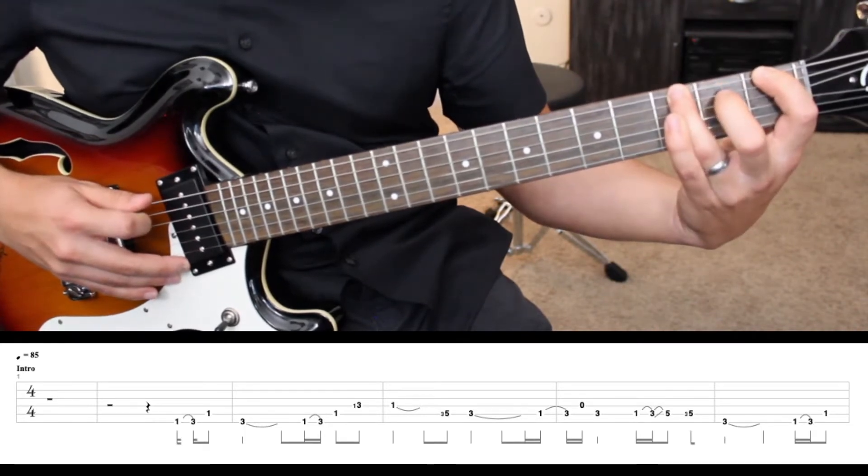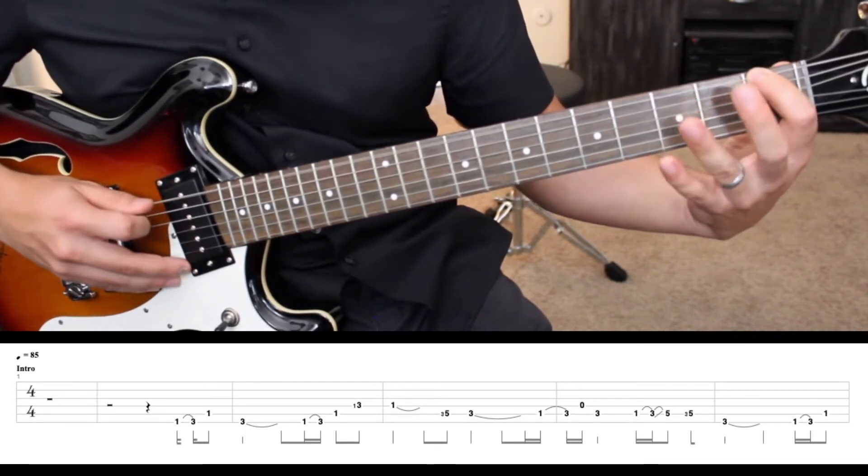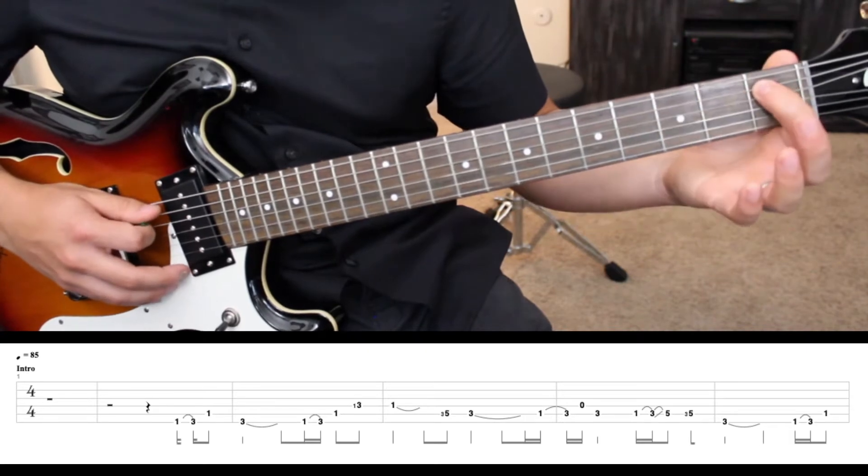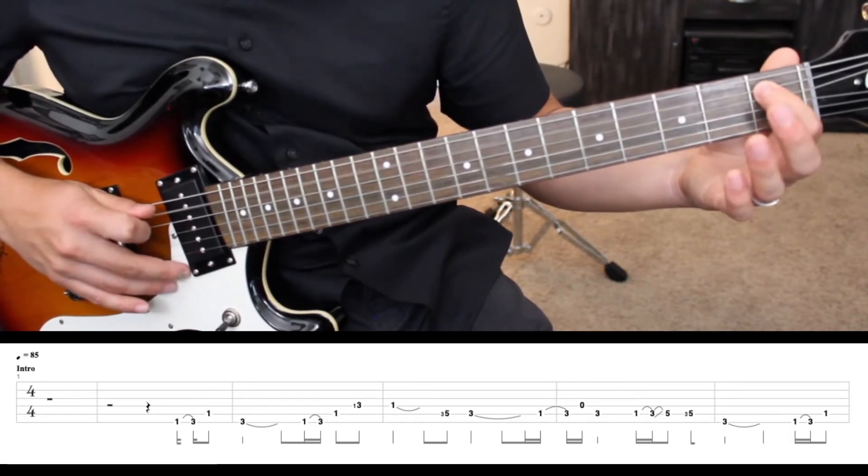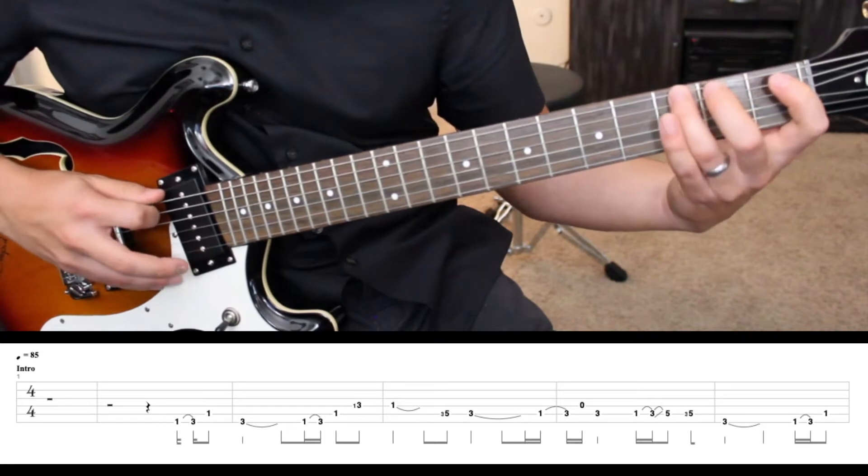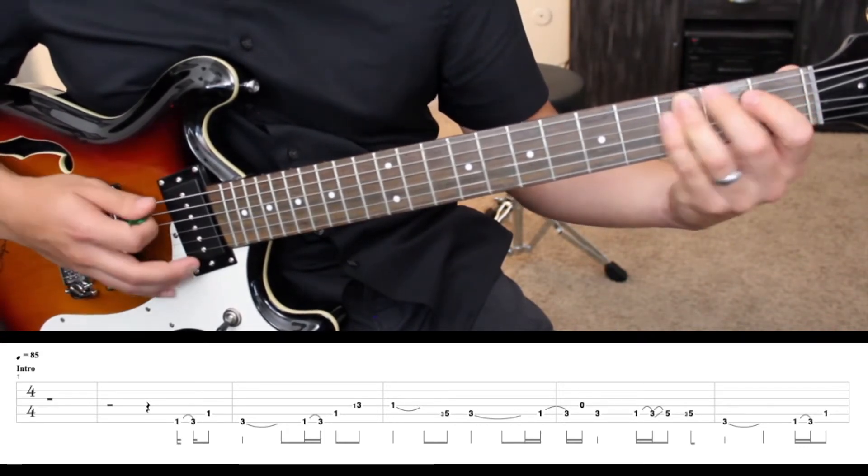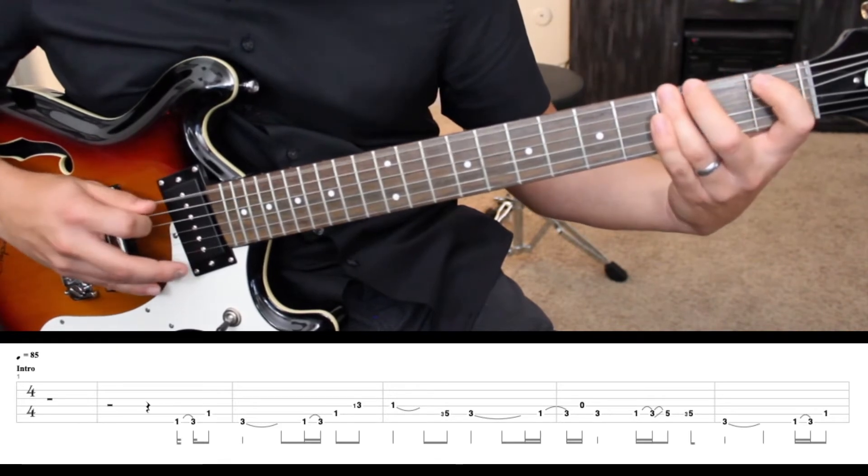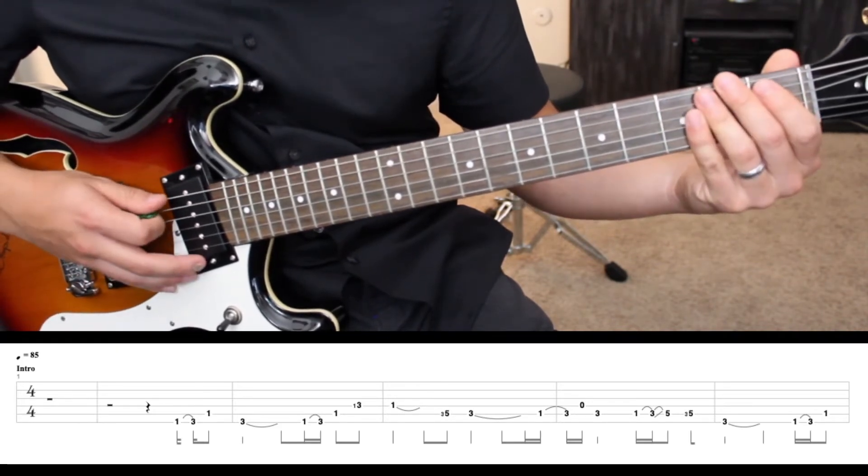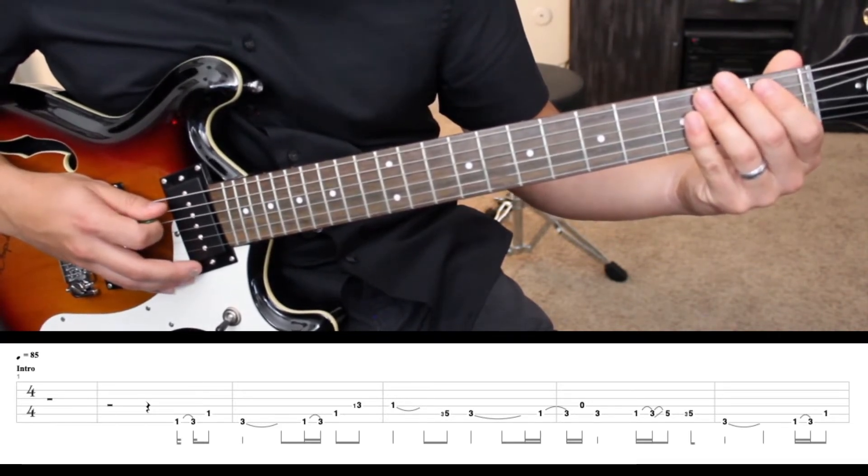We're going to start with a hammer-on, first a third fret, followed by a first fret on the fifth string, and ending that phrase with third fret on the sixth string. Notice the third fret falls on beat one. So we would count that, one and two and three and.